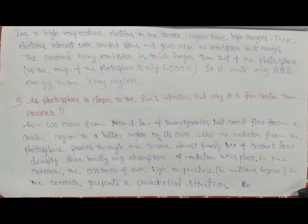Due to high temperature, electrons in the corona region have high energies, and these electrons interact with ionized atoms and give rise to emission of X-rays. The coronal X-ray emission is much larger than that of the photosphere, as the temperature of the photosphere is only 6000 Kelvin, which is relatively low, so photosphere emits very little energy in the form of X-ray radiation.